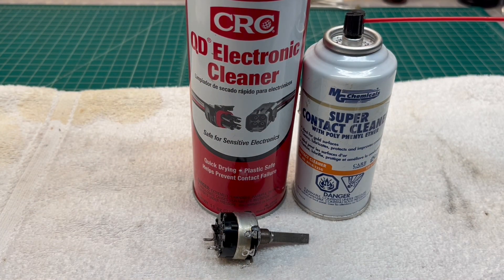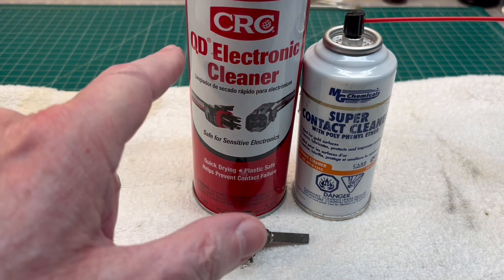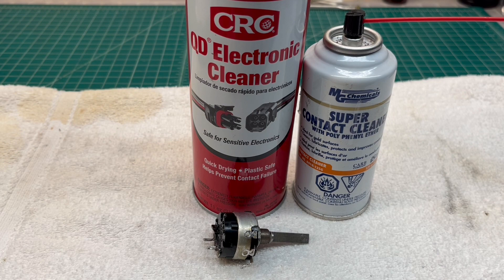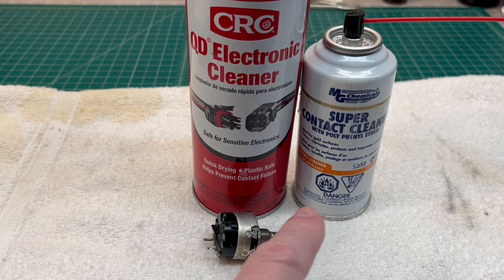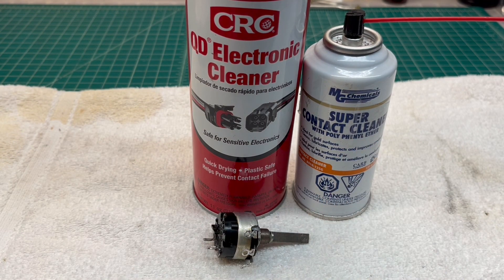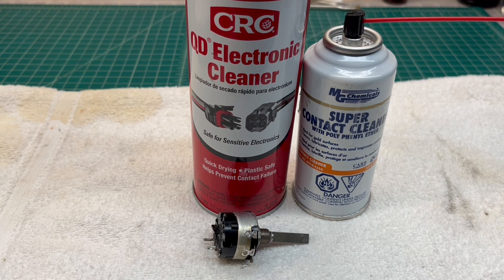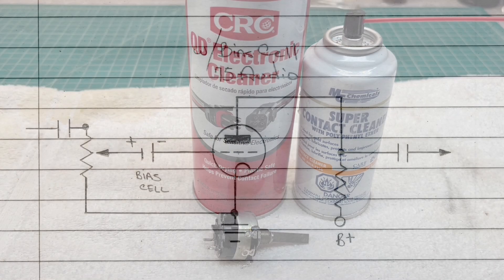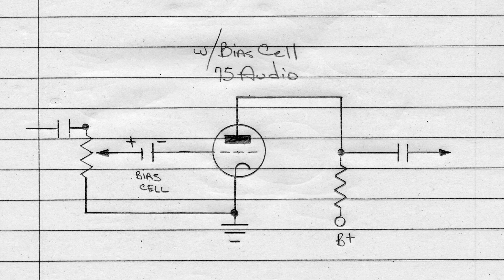You guys can see what I used to clean the on-off switch and the volume control potentiometer. I started out with the QD electronic cleaner with about four or five applications, then moved over to the super contact cleaner from MG chemicals. That seemed to solidify the repair and do the best job.